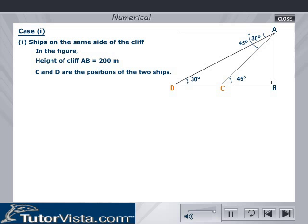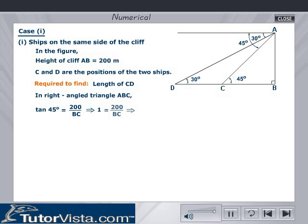C and D are the positions of the two ships. We need to find the length of CD, the distance between the ships. In right-angled triangle ABC, tan 45° = 200/BC, which implies 1 = 200/BC. Therefore, BC = 200 meters.